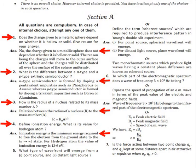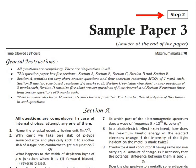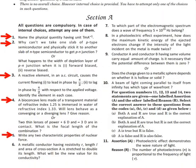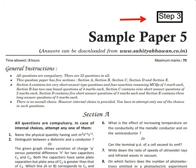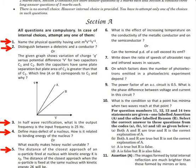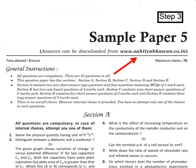In step 2 of the sample papers, the answers to the questions are provided at the end of the respective sample papers. In step 3, the final step, the answers to the questions are provided at the website www.sahitibhavan.co.in.